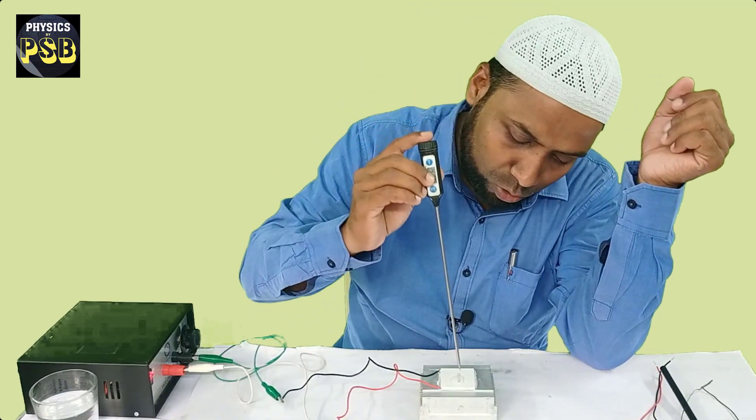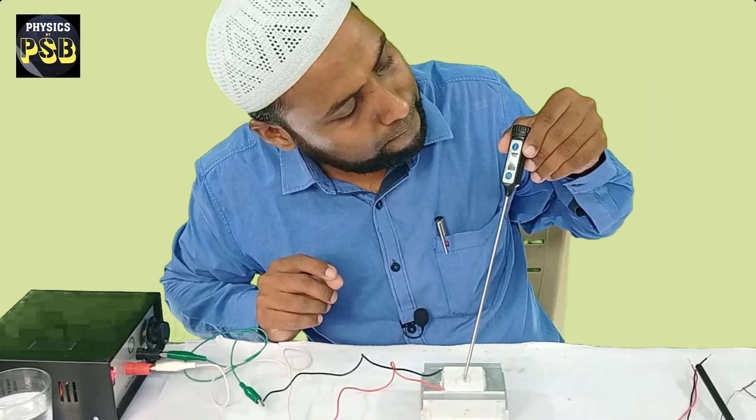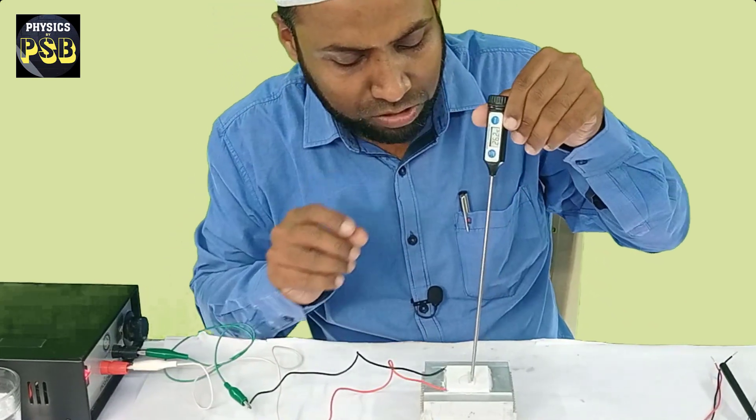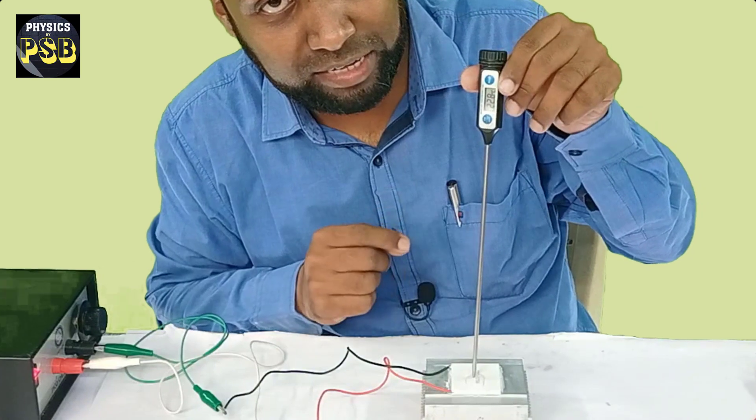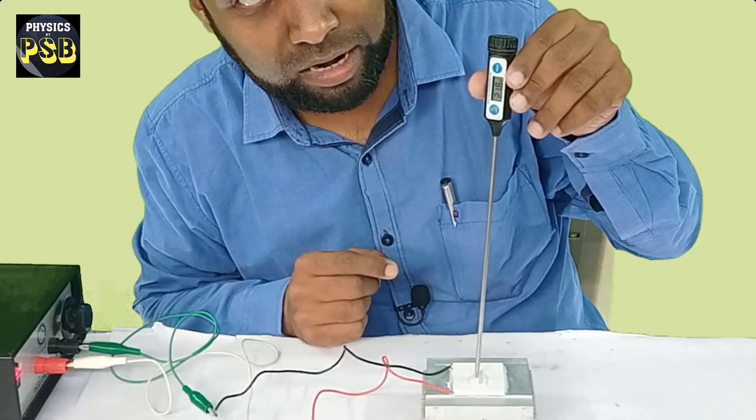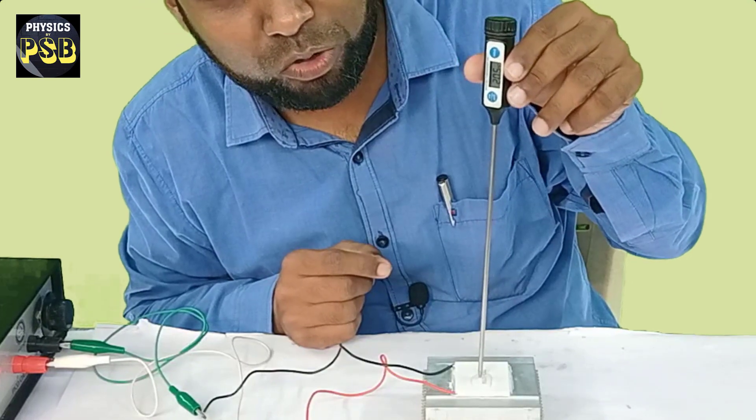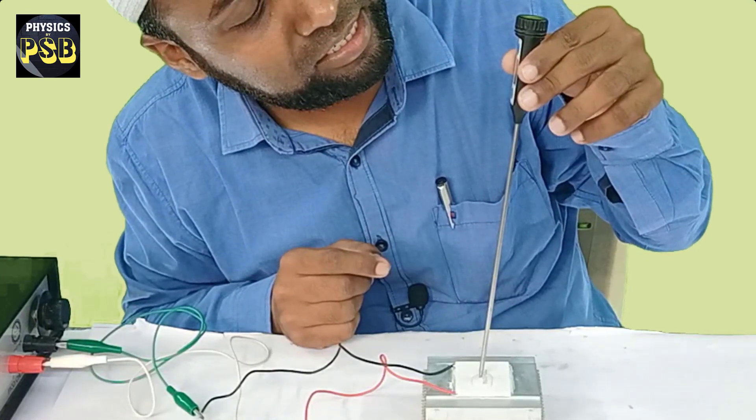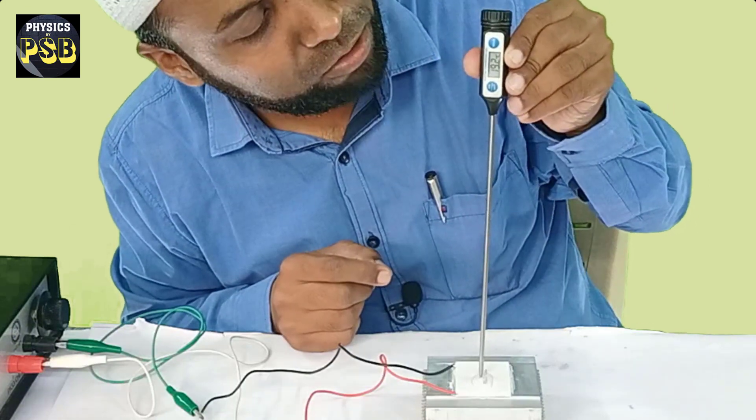Now, place this on water drop. You can observe the temperature is keep decreasing. And it was 33 something. Now, it has reduced to 21 degree Celsius. That is 20 degree Celsius. That is keep reducing.